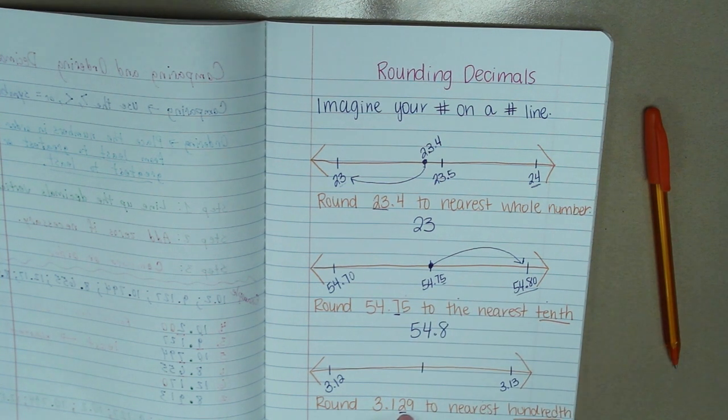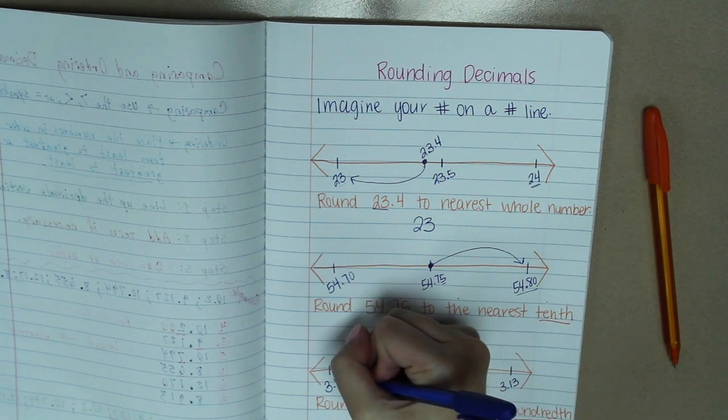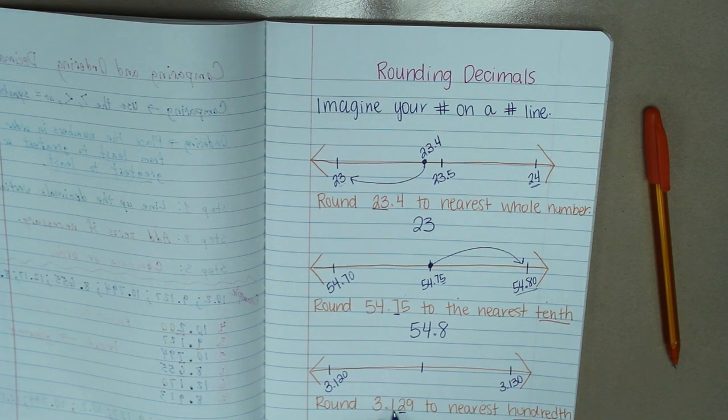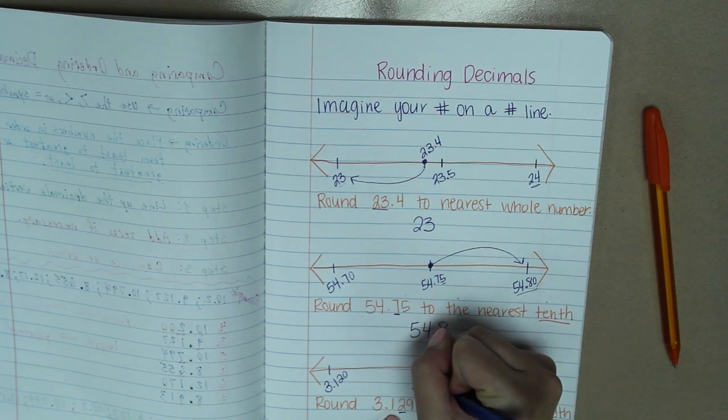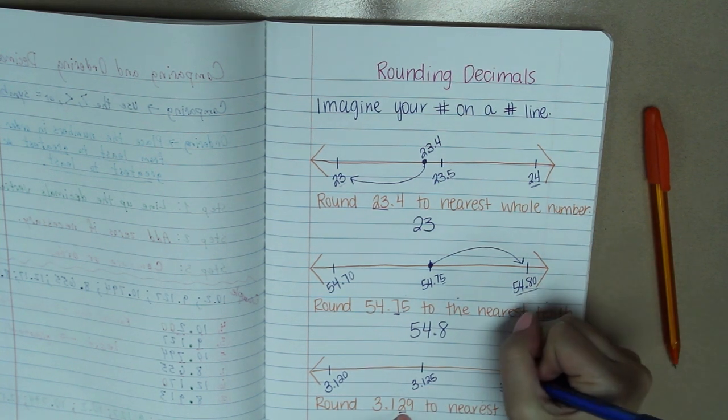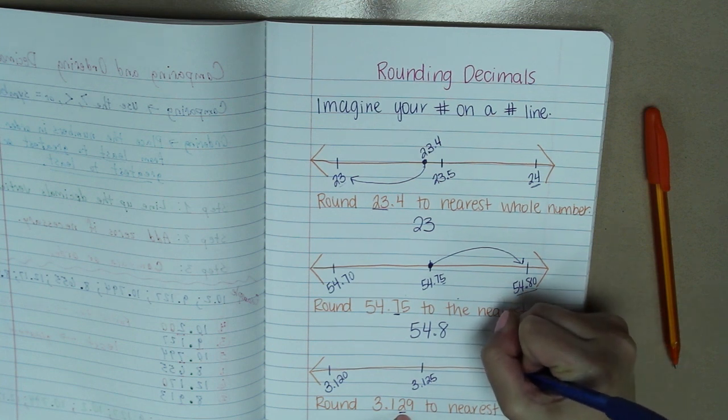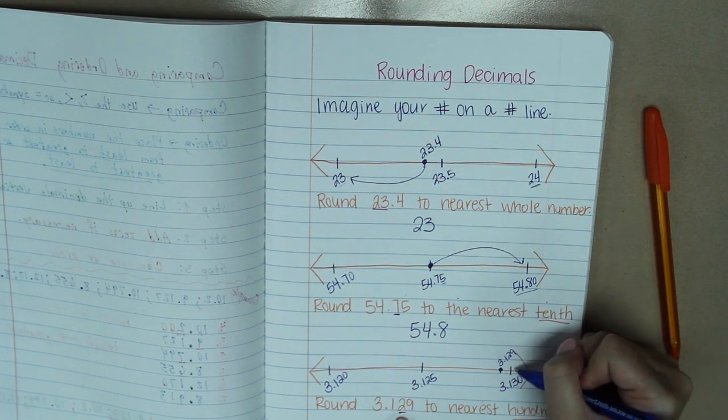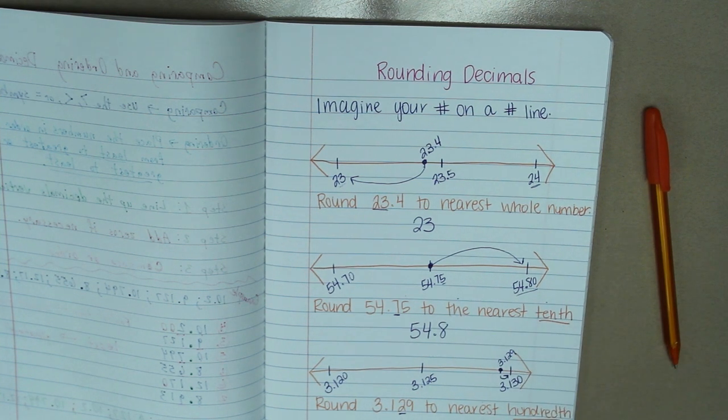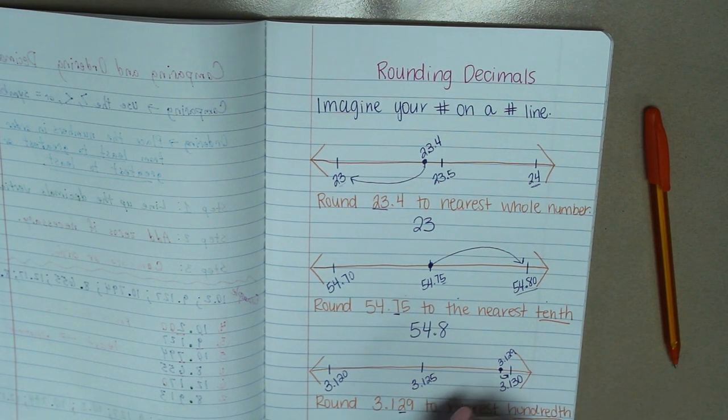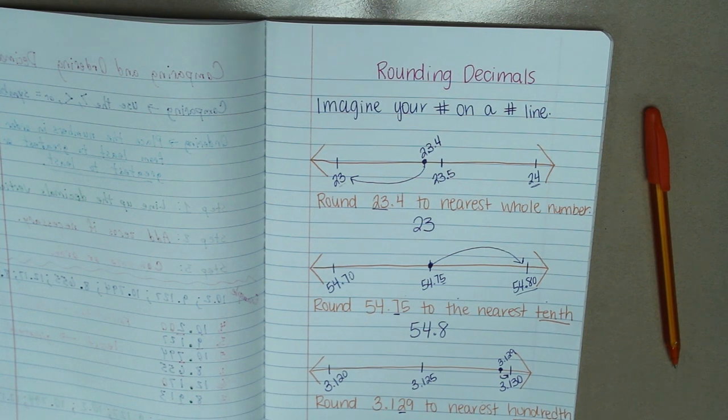Right in the middle. Imagine this is 120 thousandths, and this is 130 thousandths. We want to place 129 thousandths. In the middle is going to be 3 and 125 thousandths. So 129 thousandths would be located over here, really close to the right side. Now this one is kind of obvious. We can obviously see which one it's closest to. So 3 and 129 thousandths rounded to the nearest hundredth is going to be 3 and 13 hundredths.